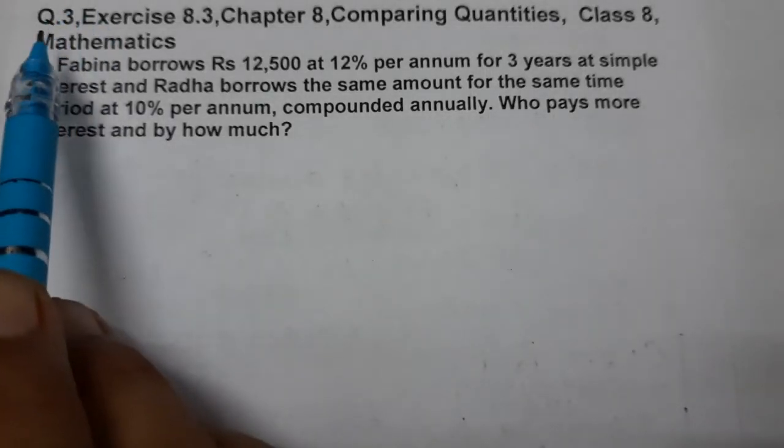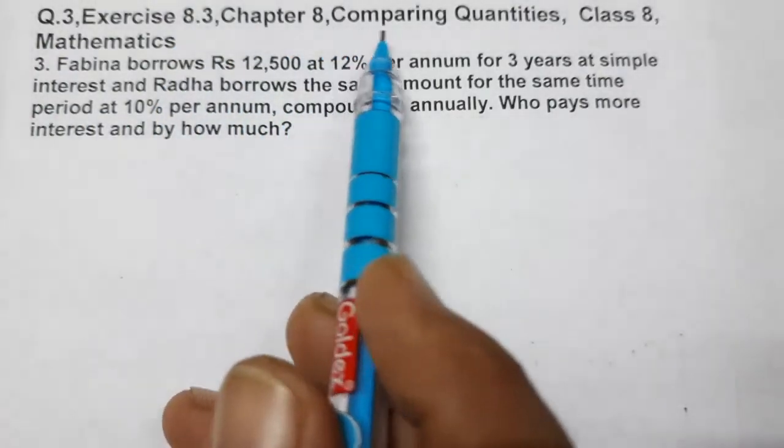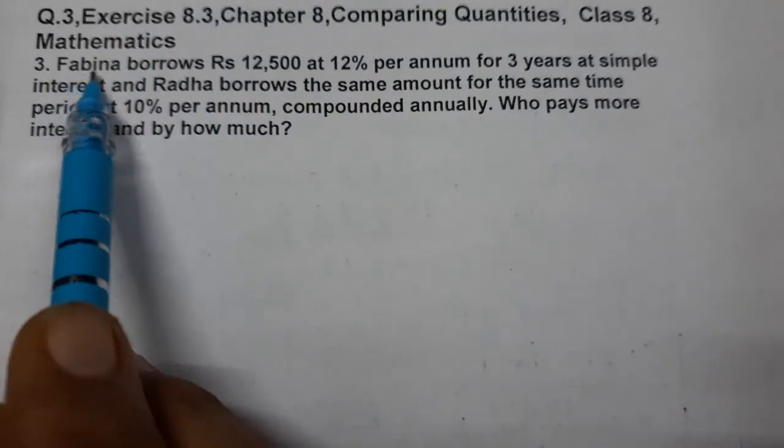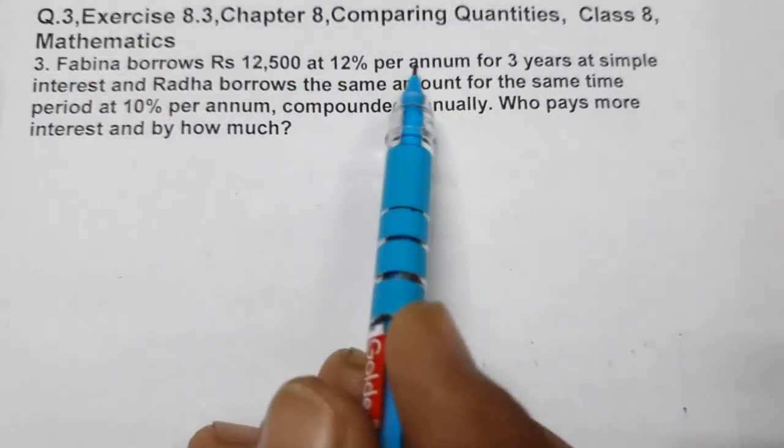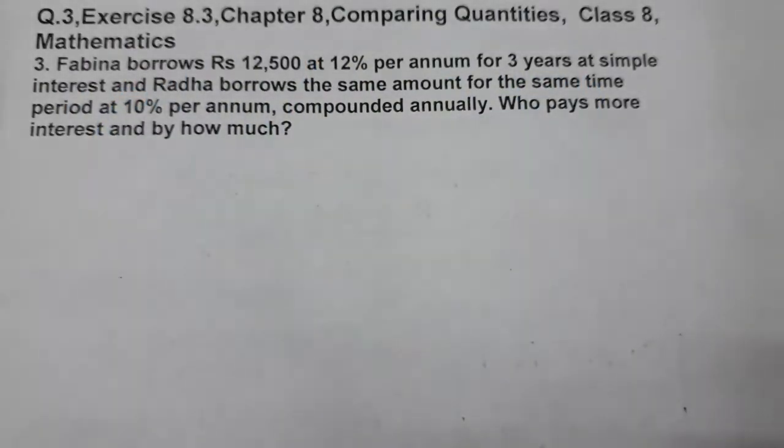Hello students, today we are going to do question number 3 of exercise 8.3, chapter 8, comparing quantities, class 8 mathematics. Fabina borrows rupees 12,500 at 12% per annum for 3 years at simple interest.